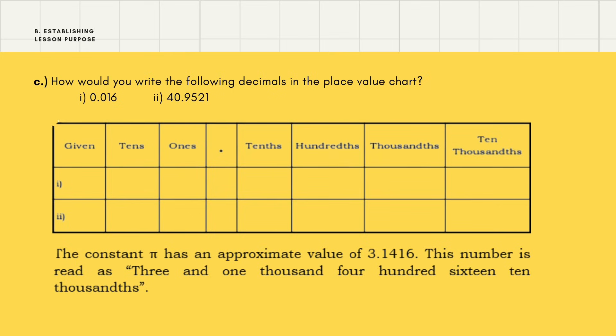To correct our reading of example two, 40.9521 is read as 'forty and nine thousand five hundred twenty-one ten-thousandths.' That is the correct way of reading that decimal number according to its place value.